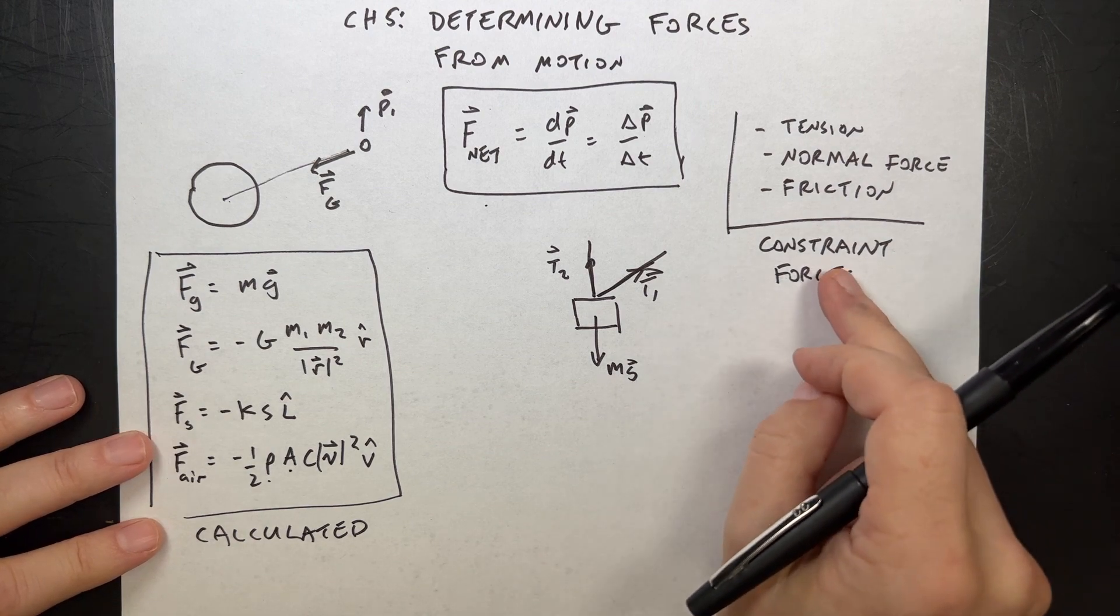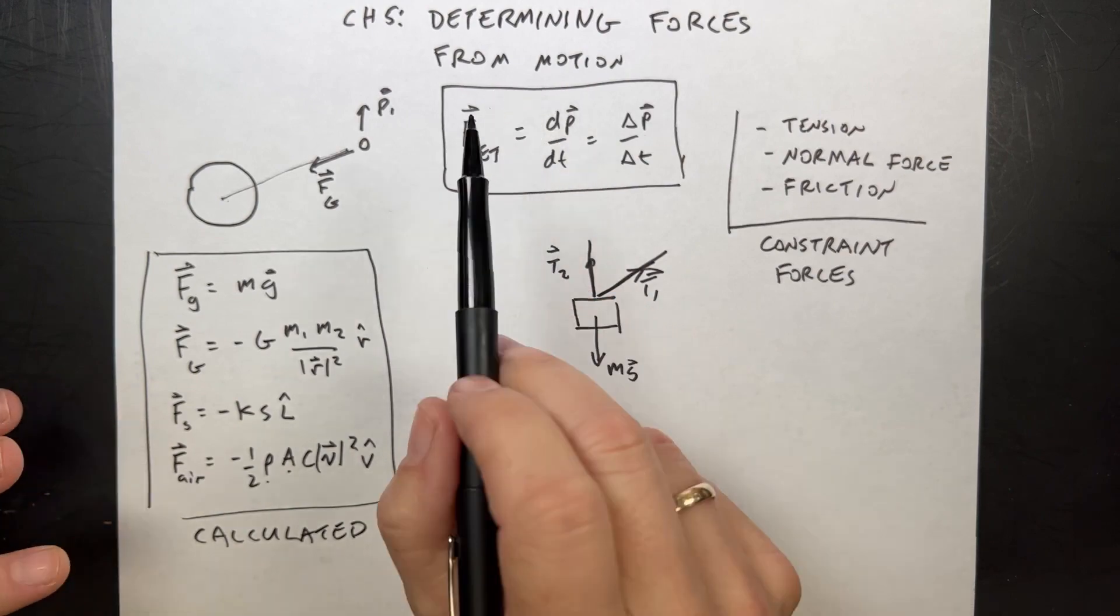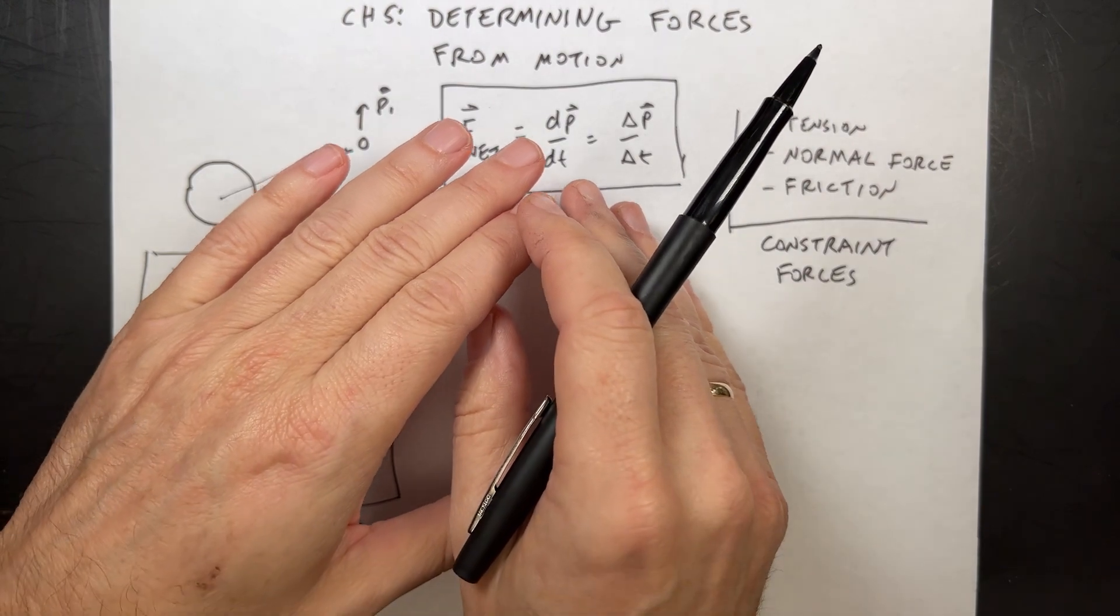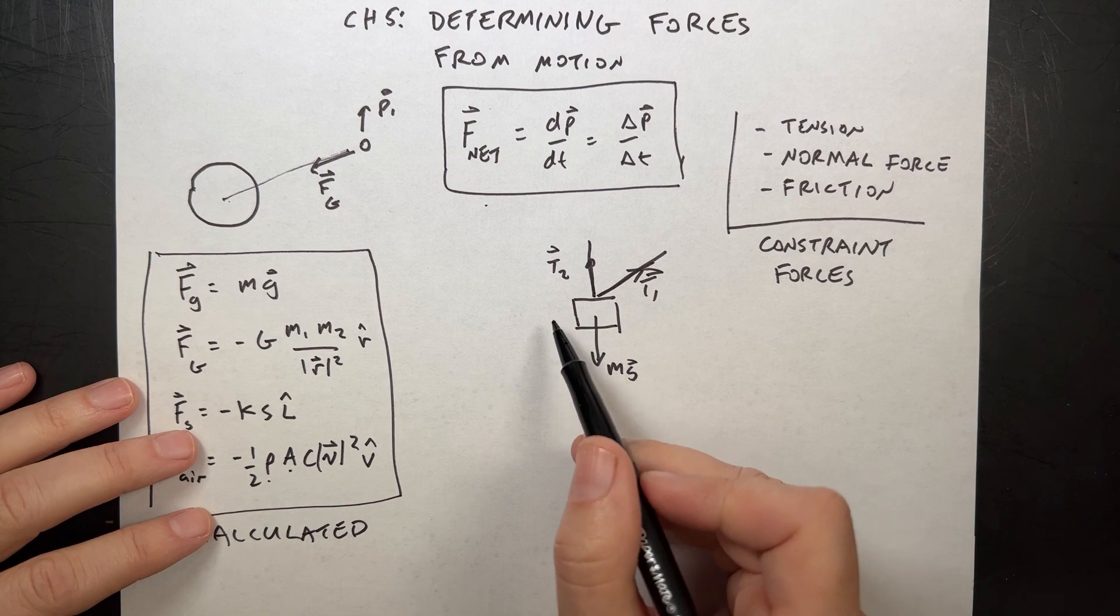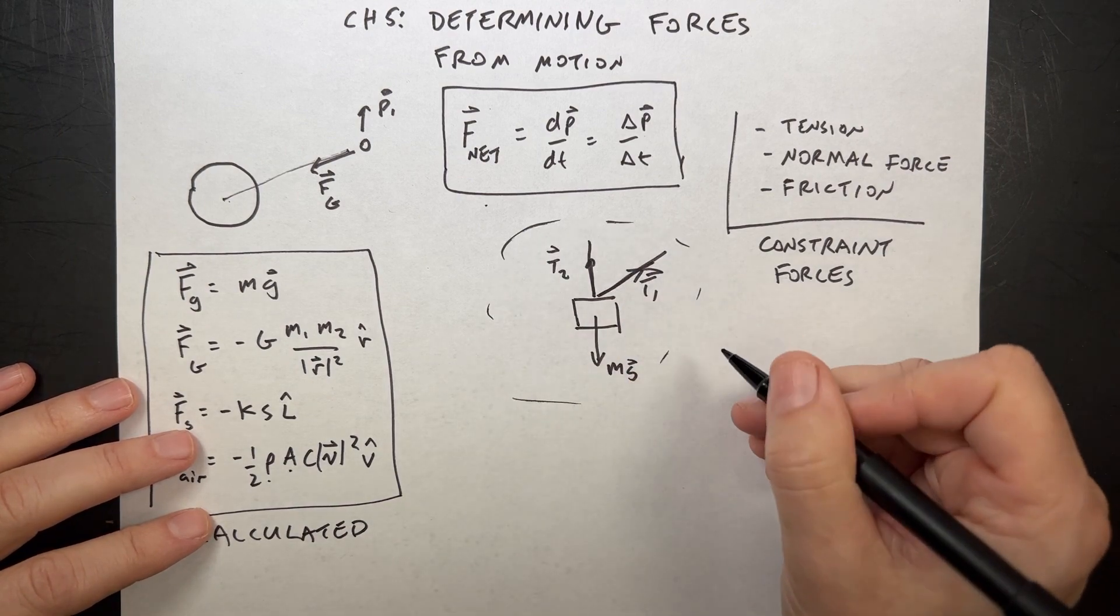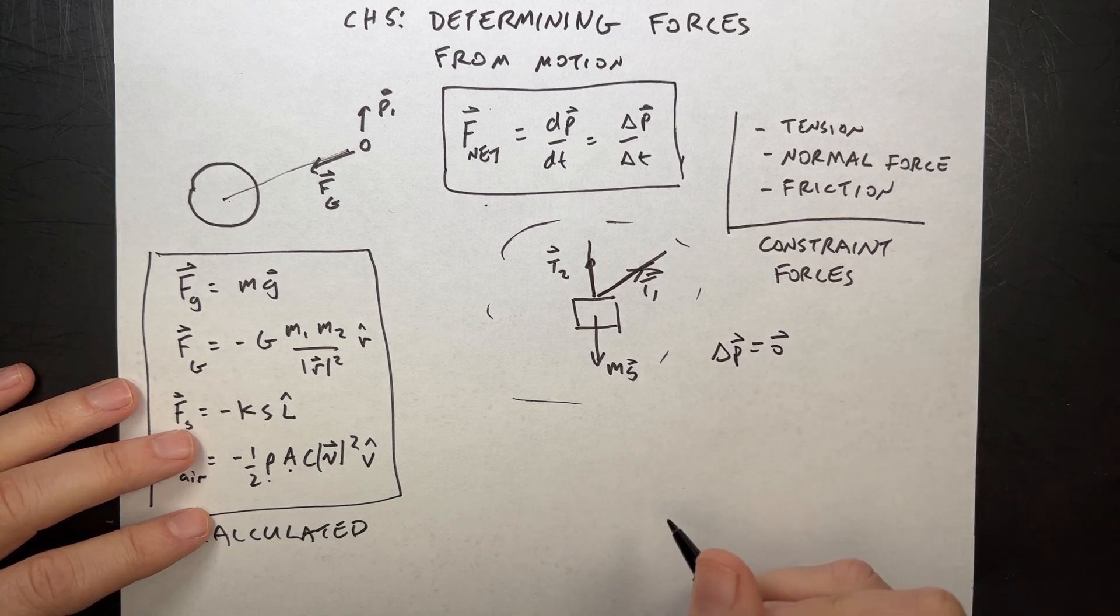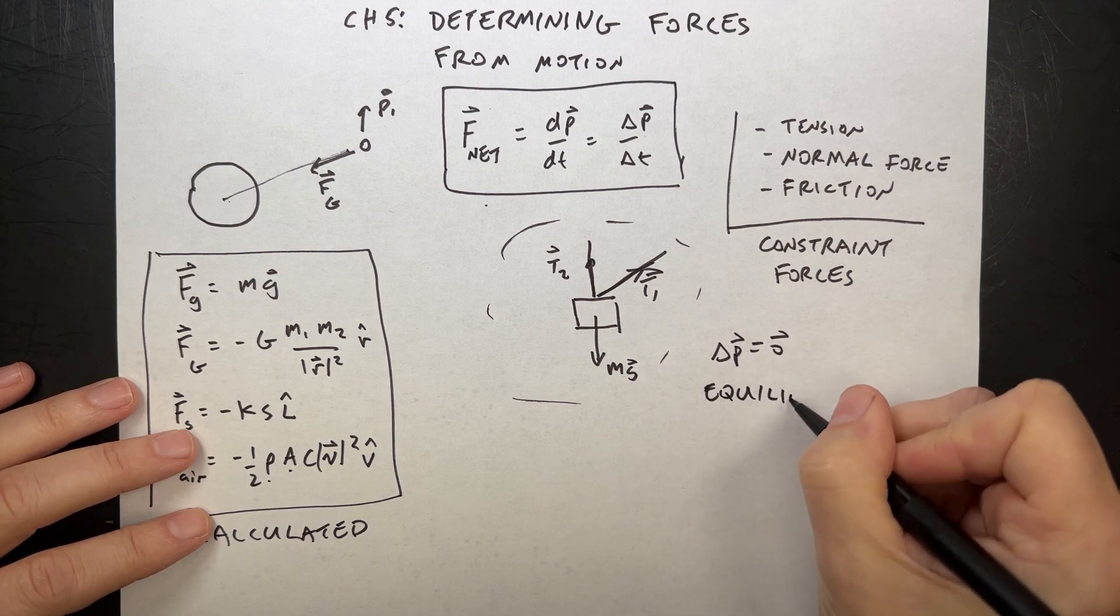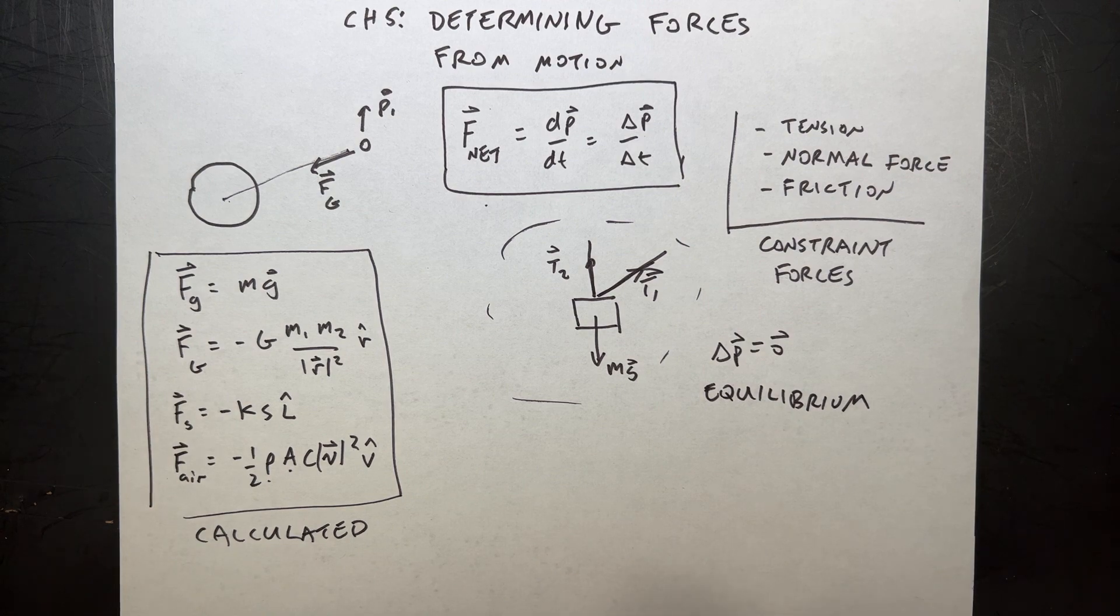Instead, what we can do in this chapter, it says right up here, determining forces from motion. Before, we determined the forces and found out the motion. Now we want to find out about the motion and infer ideas about the force. So suppose I have this block right here, and it's hanging there at rest. Then delta p is equal to zero. We call this equilibrium. Equilibrium.